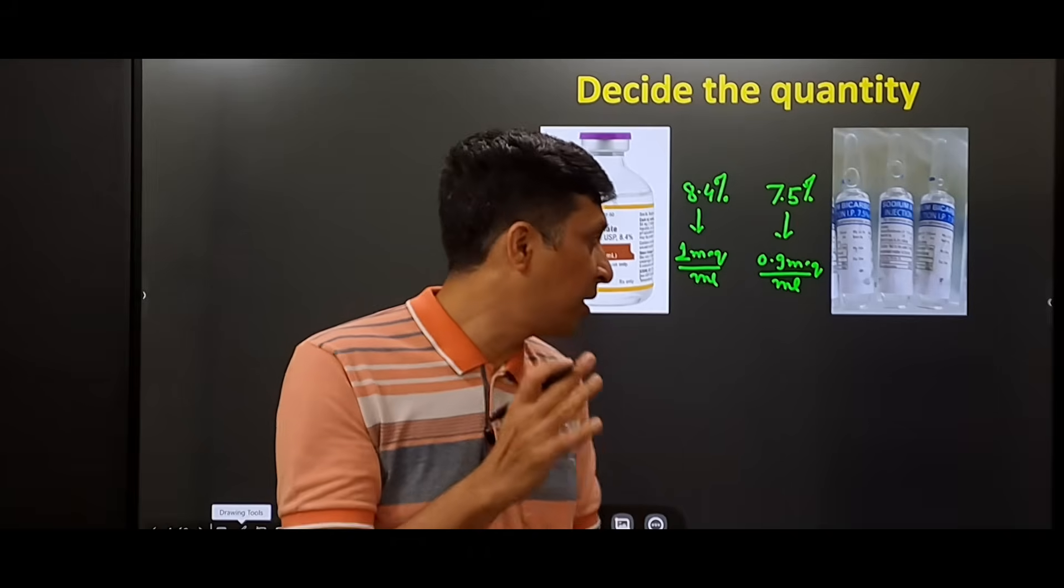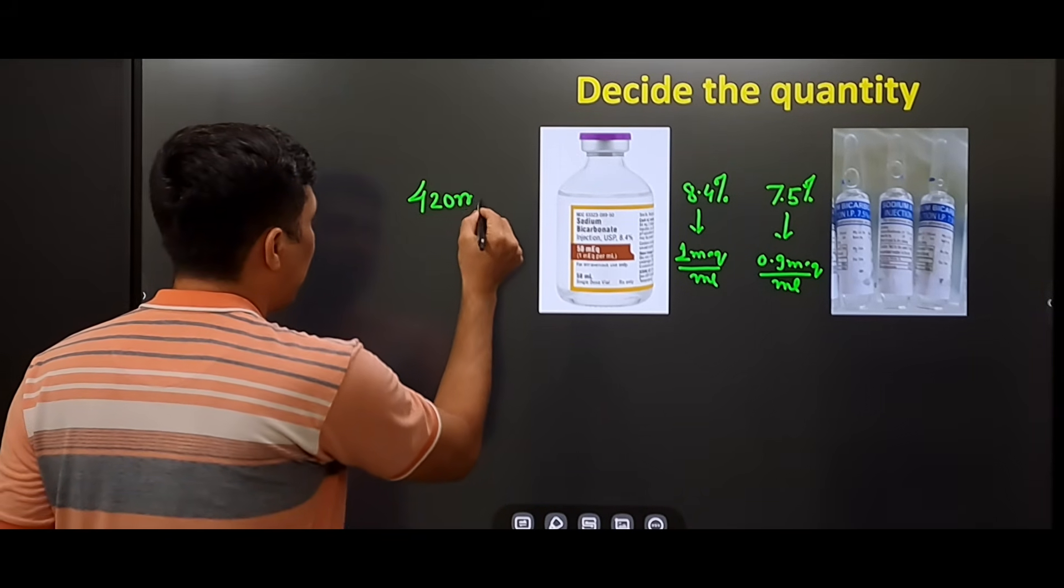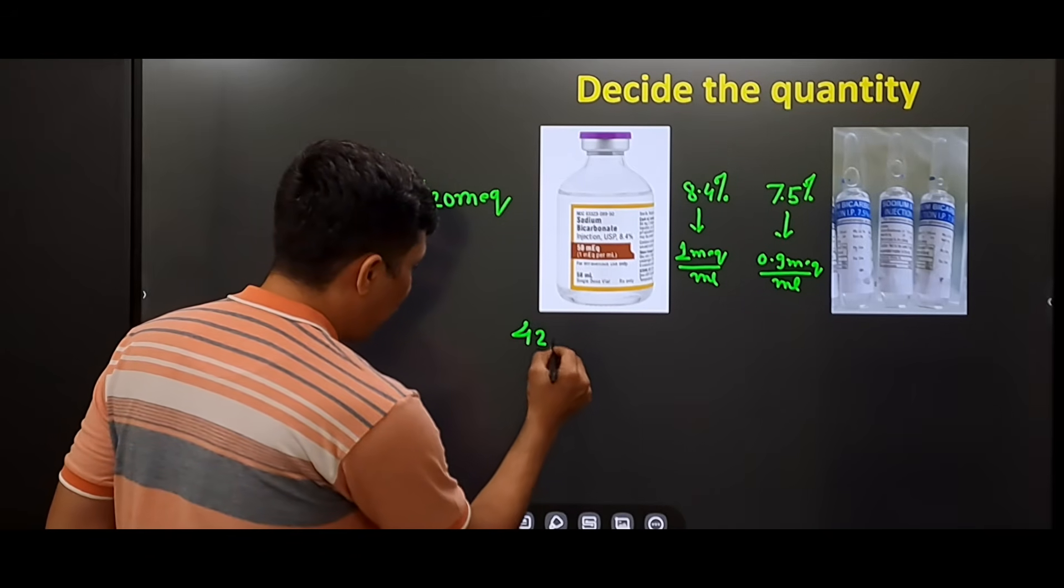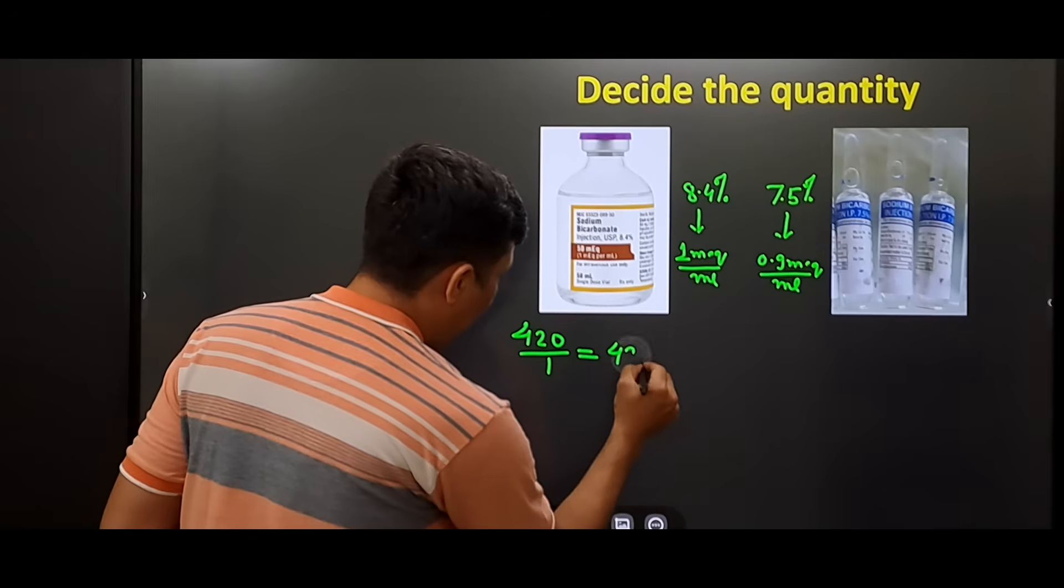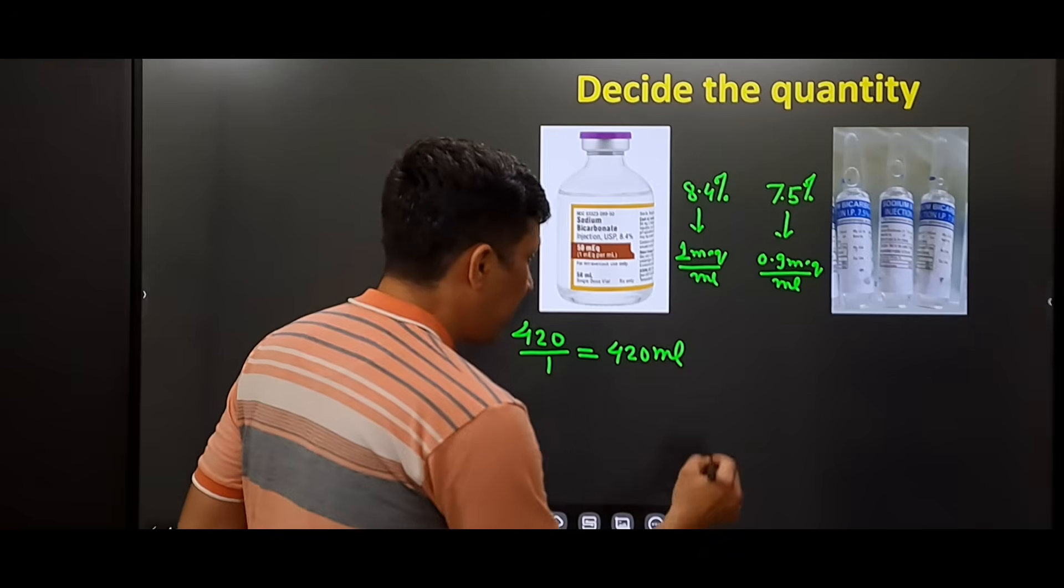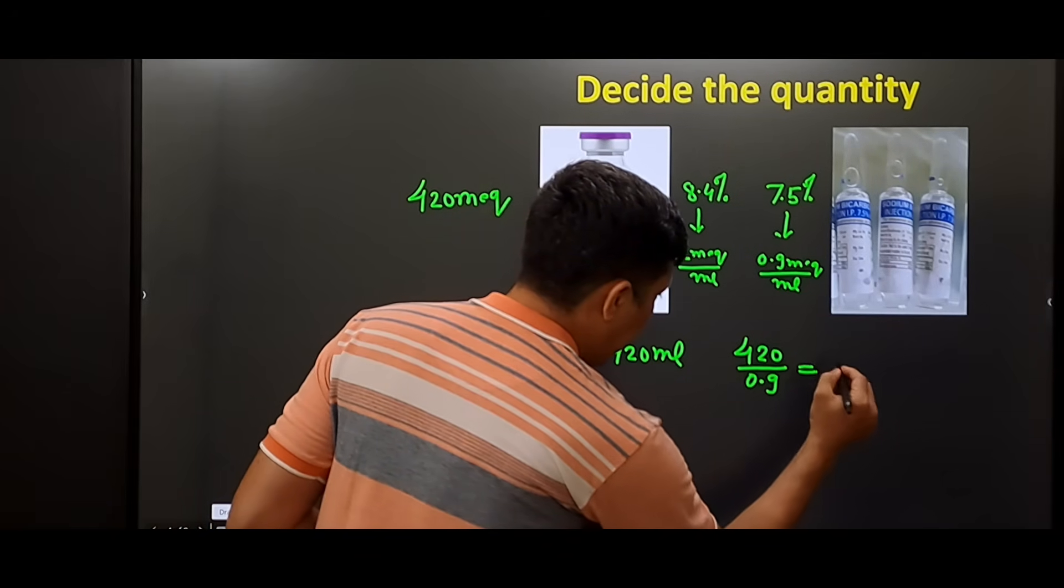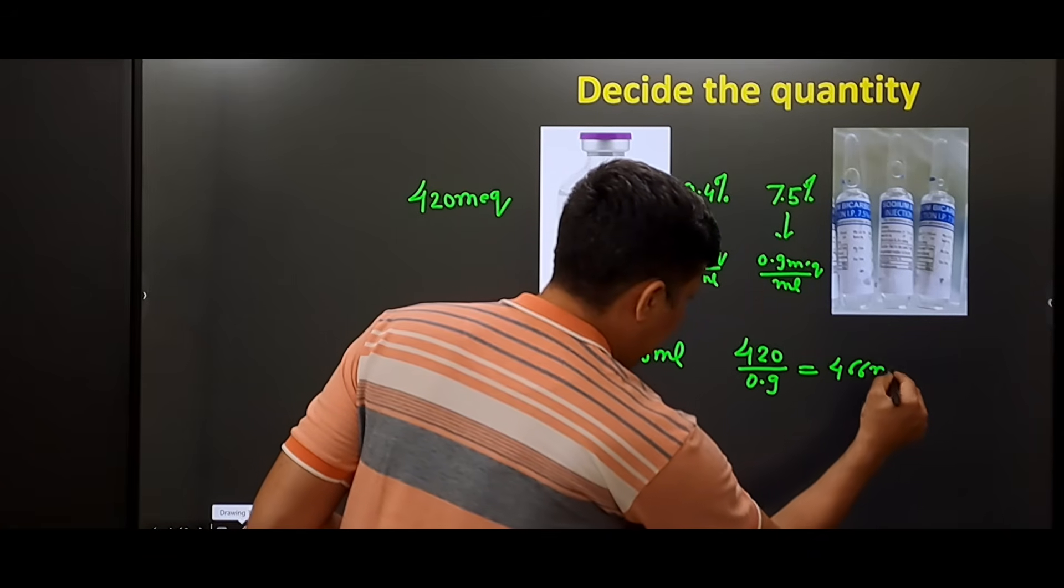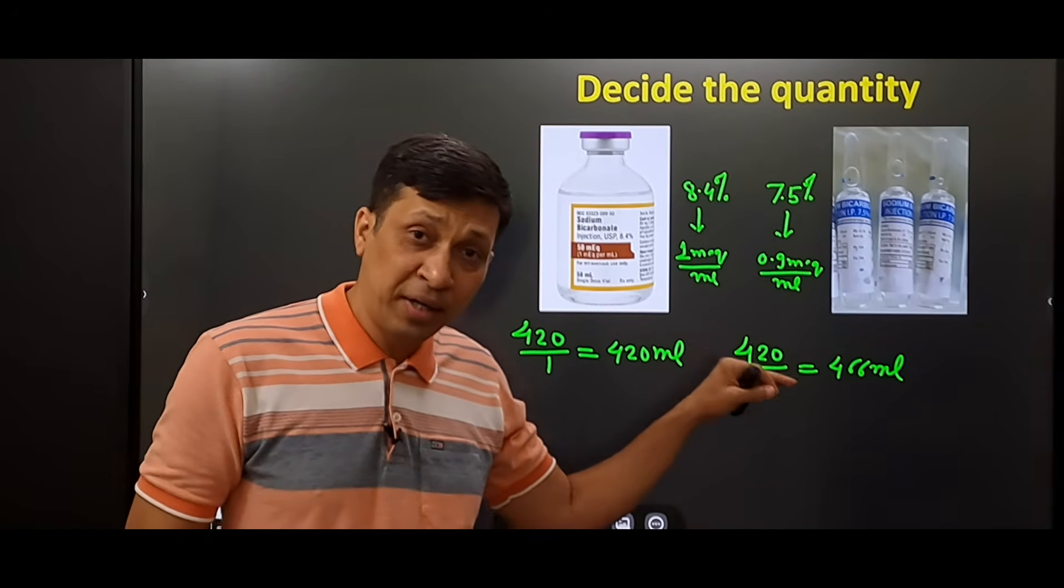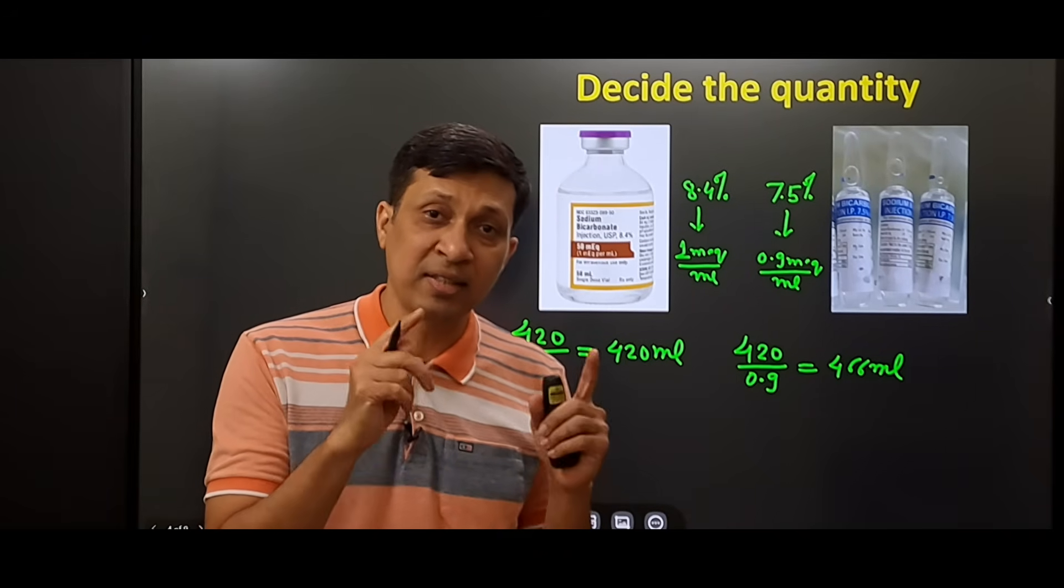We have calculated that we require 420 milliequivalents of drug. If you are using 8.4%, then you will need 420 divided by 1, which equals 420 ml of drug. If you are using 7.5%, then it will be 420 divided by 0.9, which is around 466 ml. So depending upon the concentration of drug, the actual quantity that is to be given to the patient will change.